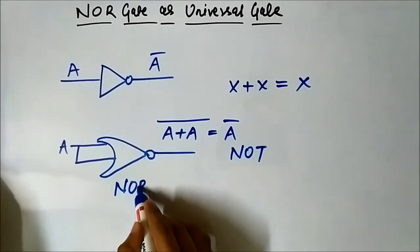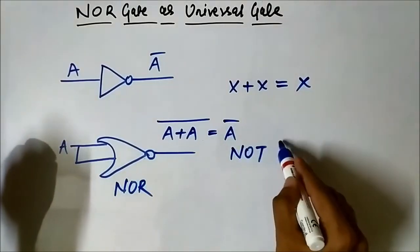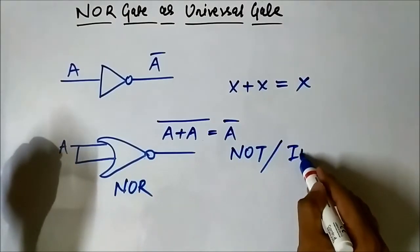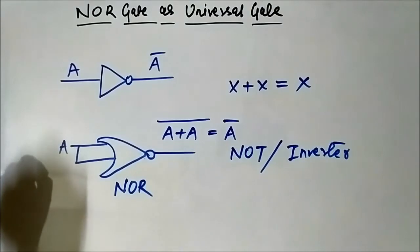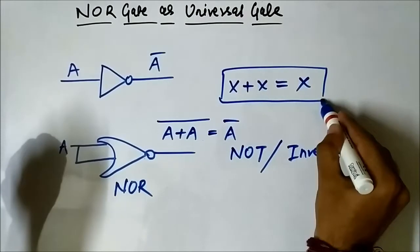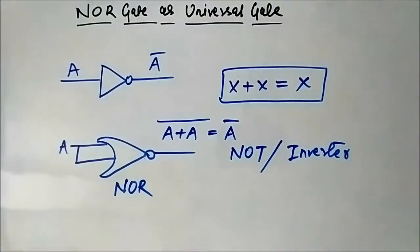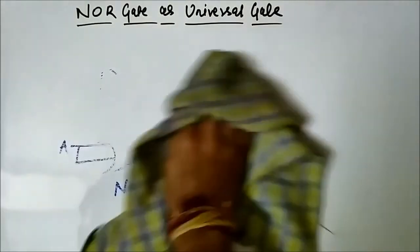So we got the inverter or NOT gate output using the NOR gate. This Boolean algebra rule - same signal ORed with itself gives the same value - is what we used here to achieve the inverter function.